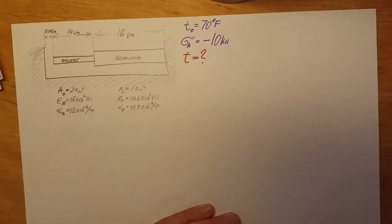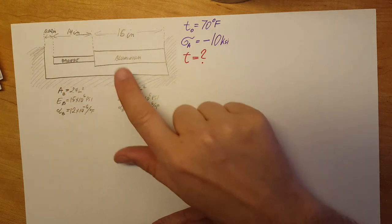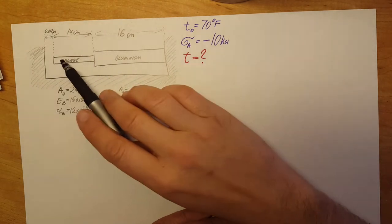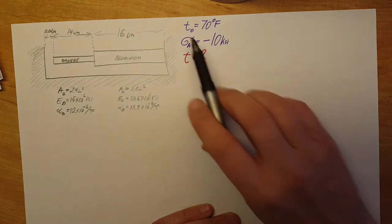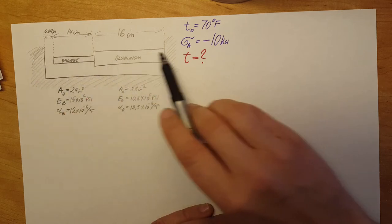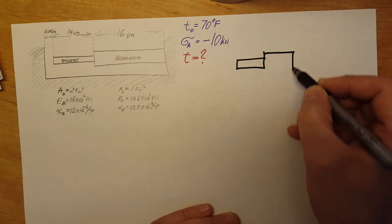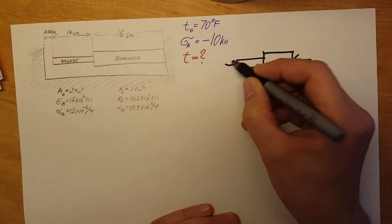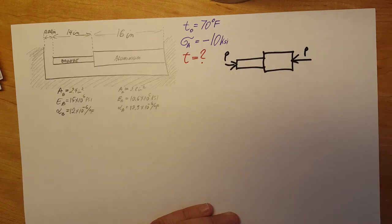To start the problem, we'll work backwards from the final stage. At the final temperature, the two pieces are extended and pushing against the wall of the retaining container. We know this because we are given a compression stress in the material, meaning it filled the gap and is pushing against the wall. So in the final stage, both the aluminum and bronze have some kind of force keeping them in place — let's call this P.